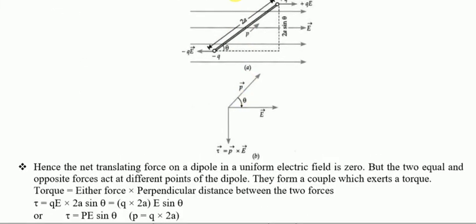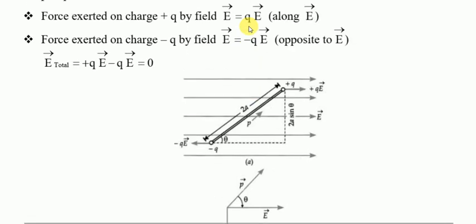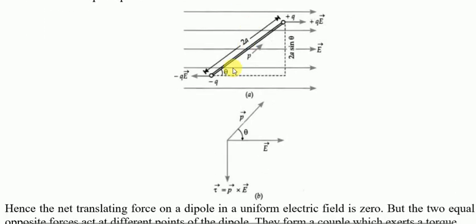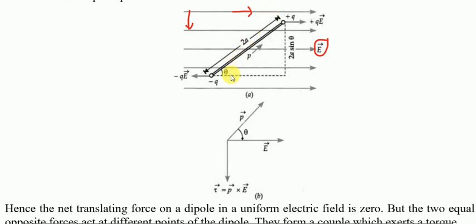Looking at the diagram, you can see the lines — those are the electric field lines. These lines are equidistant and parallel to each other, which means the electric field here is uniform. Within this particular uniform electric field, we have placed a dipole.